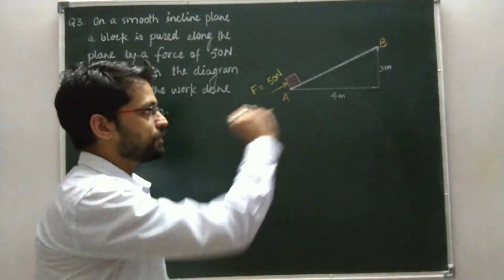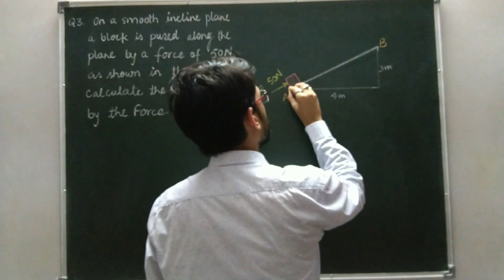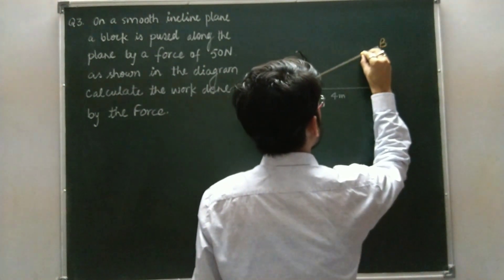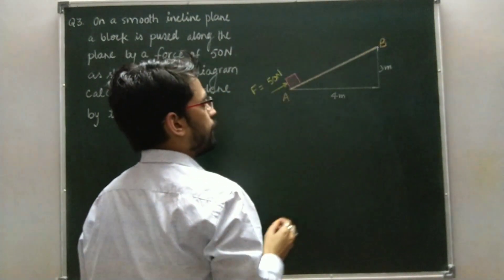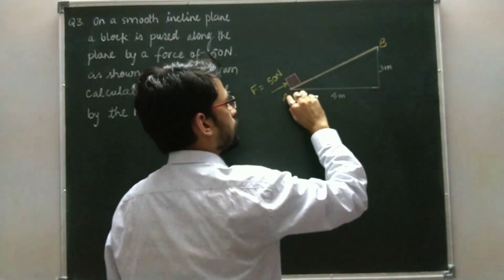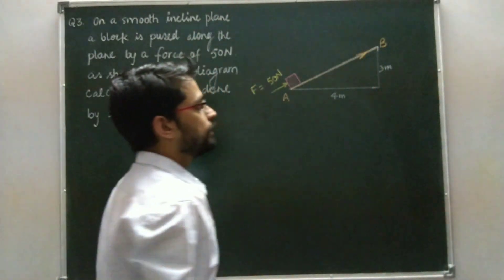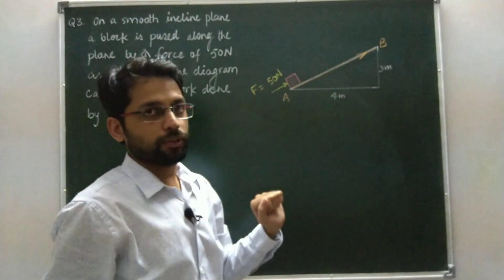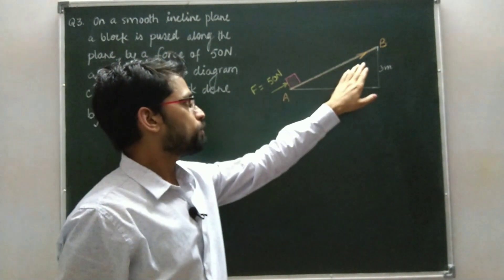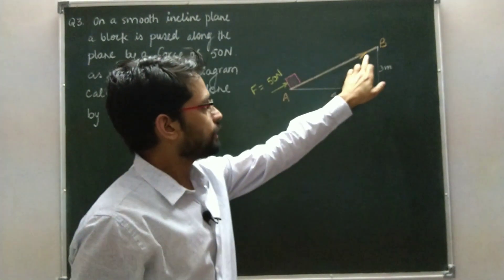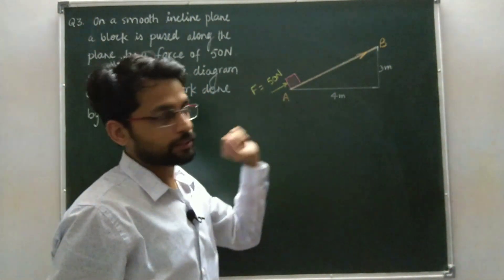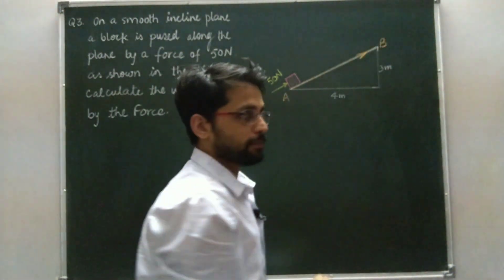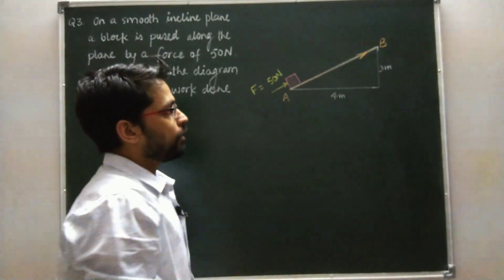In this case, the initial point is A and the final point is B. Join these two points with a straight line, and put an arrowhead from initial to final — this line shows the displacement of the body. You can see that the displacement is in the direction of the force.